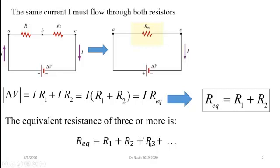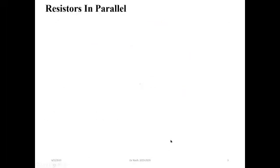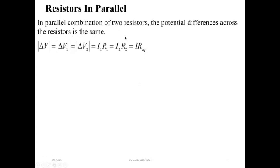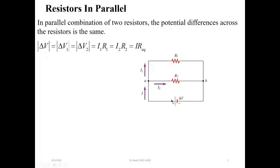For parallel connections, as covered in previous videos, all potentials across all elements are equal. The potential difference across the first resistor equals the potential difference across the second one, which equals the main potential. In this circuit, the main potential difference equals the potential difference across each resistor. The potential difference across R1 is I1 times R1, and the potential difference across R2 is I2 times R2.